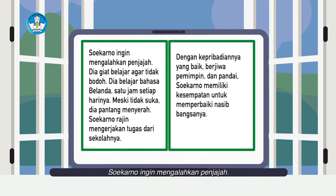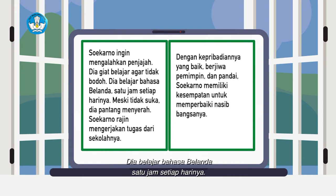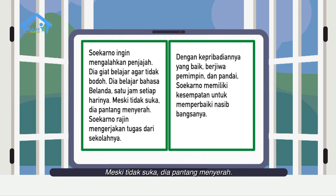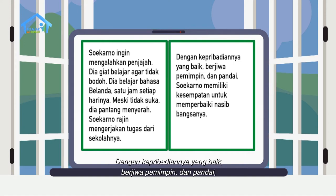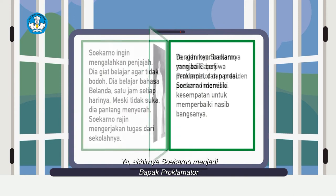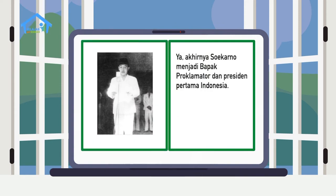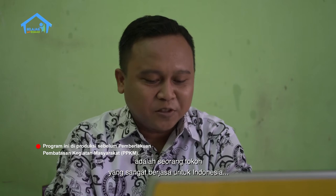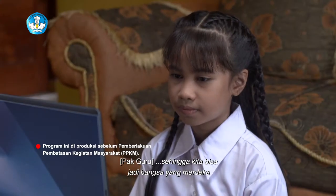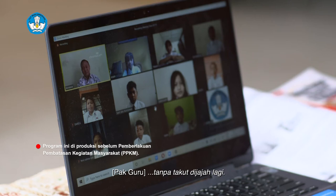Soekarno ingin mengalahkan penjajah. Dia giat belajar agar tidak bodoh. Dia belajar bahasa Belanda satu jam setiap harinya. Meski tidak suka, dia pantang menyerah. Soekarno rajin mengerjakan tugas dari sekolahnya. Dengan kepribadiannya yang baik, berjiwa pemimpin, dan pandai, Soekarno memiliki kesempatan untuk memperbaiki nasib bangsanya. Akhirnya Soekarno menjadi Bapak Proklamator dan Presiden pertama Indonesia. Insinyur Soekarno adalah seorang tokoh yang sangat berjasa untuk Indonesia, sehingga kita bisa jadi bangsa yang merdeka seperti sekarang, bisa sekolah dengan nyaman dan aman tanpa takut dijajah lagi.